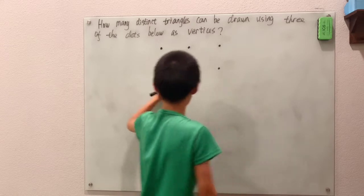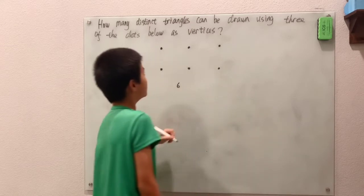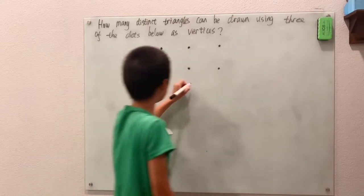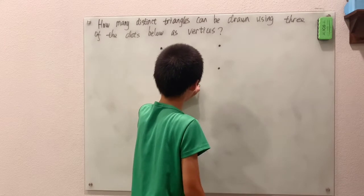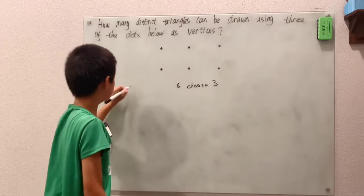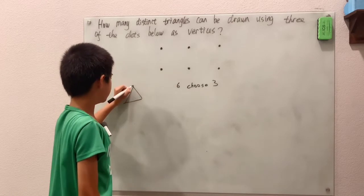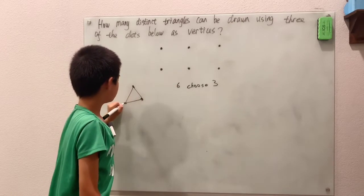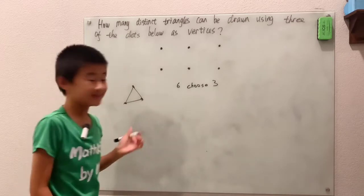of this as we have six dots and we're going to choose three of these six dots because any triangle can be constructed with three dots that are not on the same line.